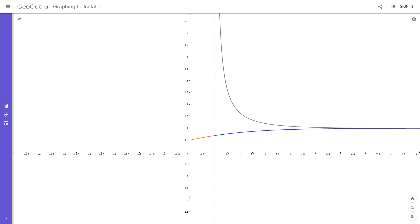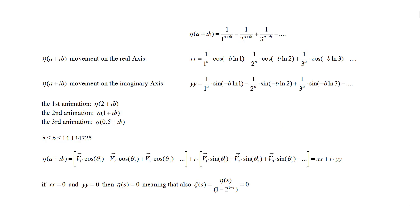In order to do that, we will first show eta function movement on the complex plane. The first equation is the eta function. The second equation is the movement of the eta function on the real axis. The third equation is the movement of the eta function on the imaginary axis. I will show you three different animations using those equations.